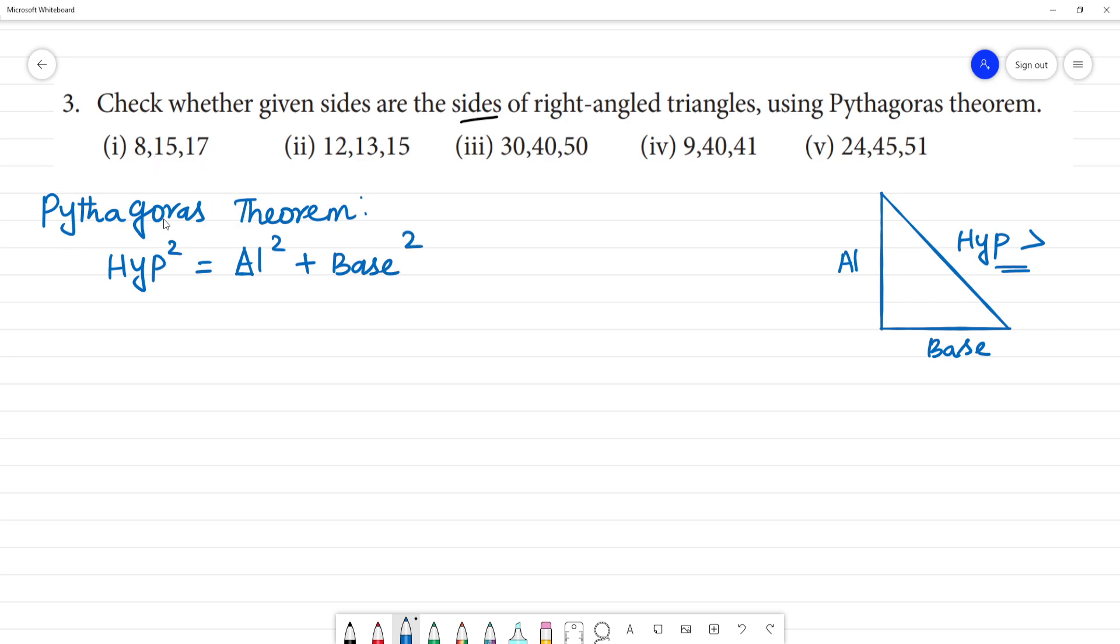If you look at the first one, this is 17, so 17 square will be equal to 8 square plus 15 square. 17 square is 289, 8 square is 64 plus 15 square is 225. If we add, 289 equals 289, so yes, these sides form a right-angle triangle.